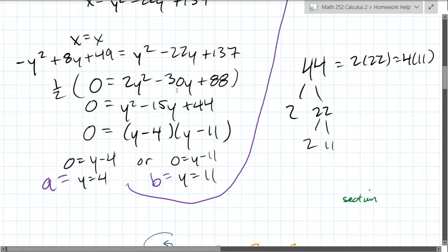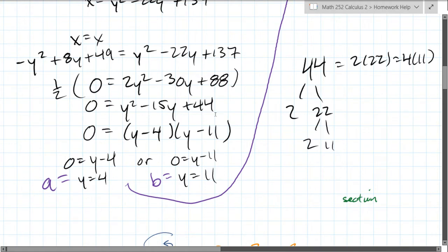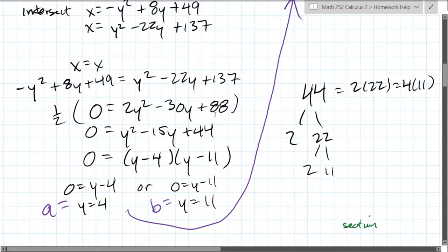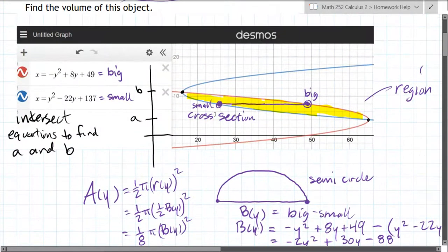And found that 4 and 11 is a way of factors. So a is equal to 4, b is equal to 11. So those are y values, so now we can go up back to the graph. We know a is 4, and b is 11.